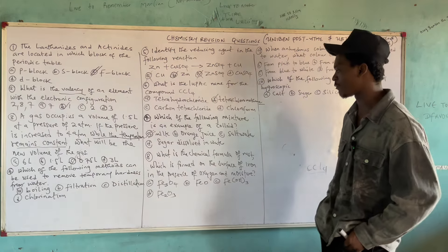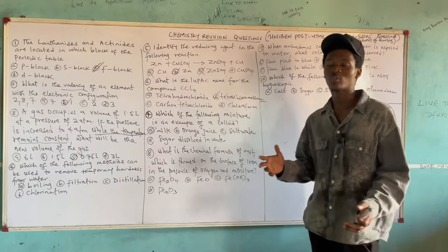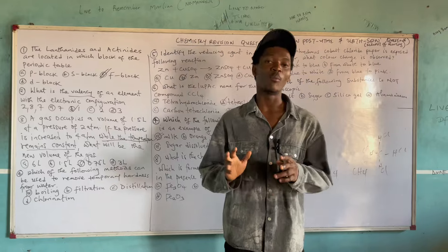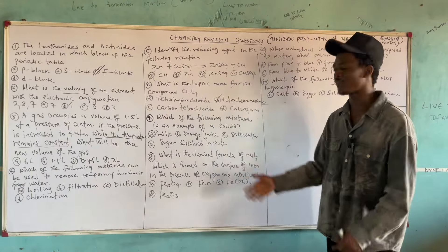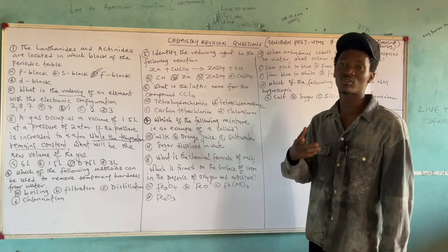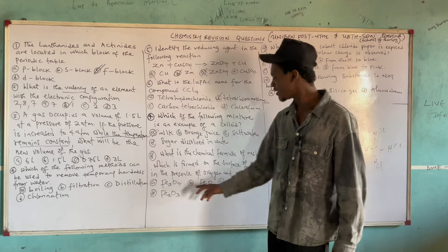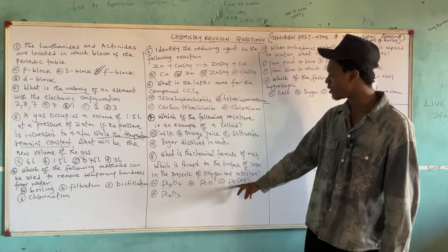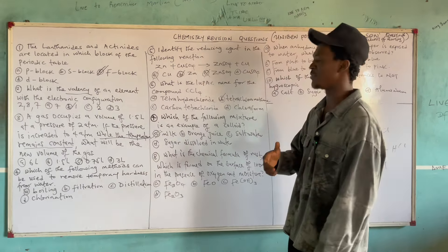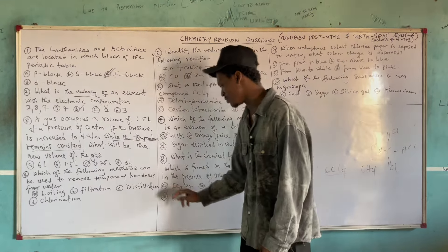Question 8: What is the chemical formula of rust, formed on the surface of iron in the presence of oxygen and moisture? Rusting is the formation of iron(III) oxide when iron is exposed to damp or moist air. Looking at the options: option A is iron(II,III) oxide, option B is iron(II) oxide, option C is iron(II) hydroxide, and option D is iron(III) oxide. Since rust is iron(III) oxide, the correct answer is option D.